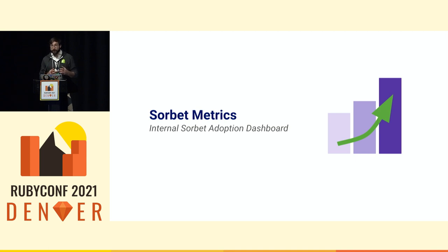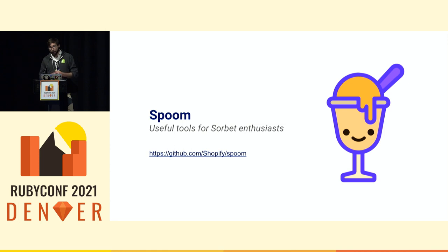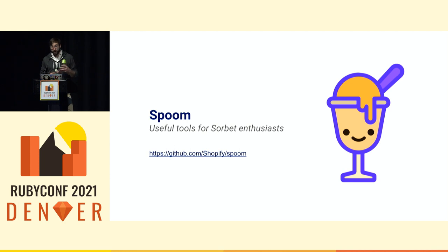After being able to actually use Sorbet on a code base, we wanted to know how much it was adopted by our teams and how much it was penetrating our culture. So we created an internal Sorbet adoption dashboard called Sorbet Metrics that helps us visualize how much Sorbet is present in the code bases, in how many code bases, which strictness is used, and what work is still to be done to bring them to a stricter level of typing. And because we wanted to share this with the community, we also open sourced this inside Spoom — our toolbox for Sorbet enthusiasts — which brings all the visualization from our internal dashboard to the open source community, plus tools to bump files to higher strictness and communicate with Sorbet over the language server protocol.